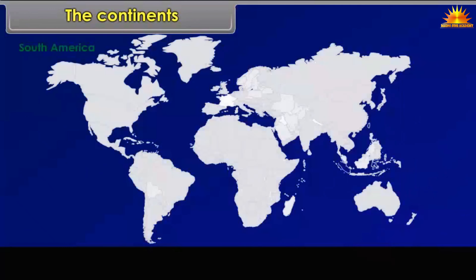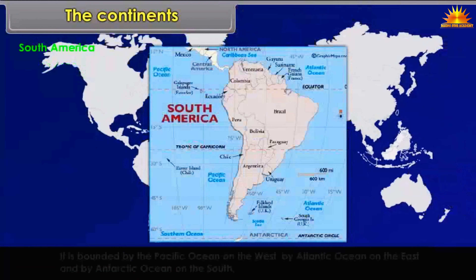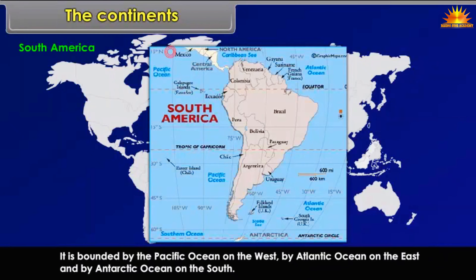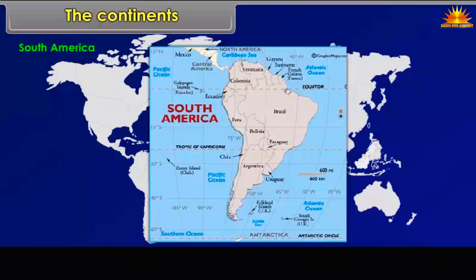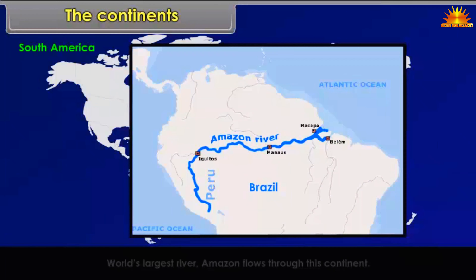South America lies mostly in the southern hemisphere. It is bounded by the Pacific Ocean on the west, the Atlantic Ocean on the east, and the Antarctic Ocean on the south. The world's longest mountain range, the Andes, runs through its full length. The world's largest river, the Amazon, flows through this continent.